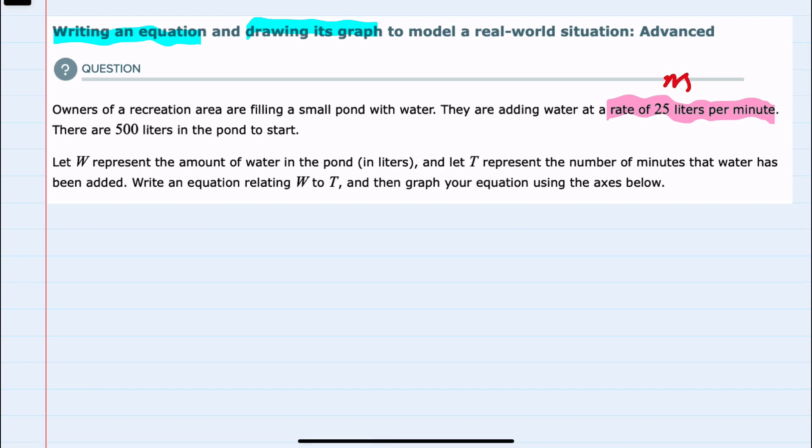And we're also told that there are 500 liters in the pond to start. And when we're given a starting value that will be our y-intercept B.